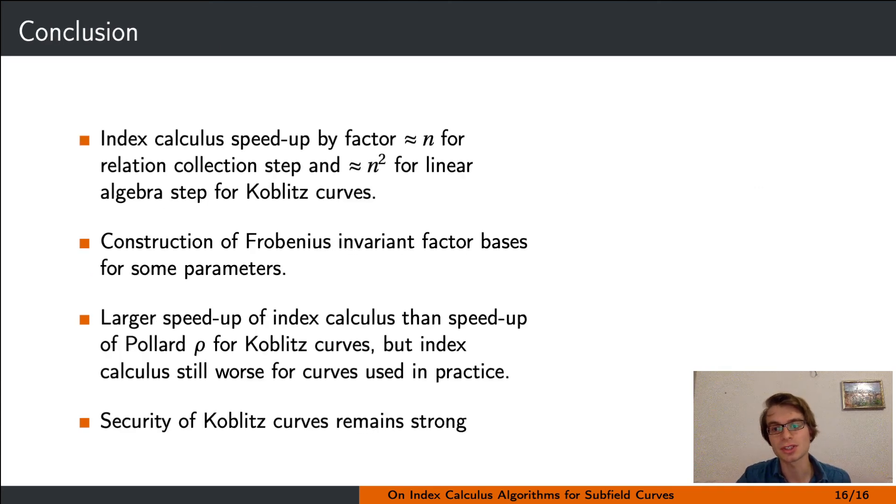To summarize, our work shows how to exploit the Frobenius endomorphism to get a speedup by a factor n for the relation collection and n^2 in the linear algebra step for some Koblitz curves. We give some practical constructions for the required factor bases for some parameters, and this work also shows how for some parameters index calculus has a better speedup on Koblitz curves than it does for Pollard's rho algorithms. However, the speedup is logarithmic in the security parameter, and overall index calculus still performs worse than Pollard's rho on curves that are actually used in practice. Therefore, the security of Koblitz curves remains strong.